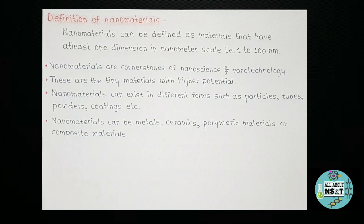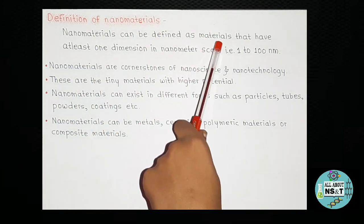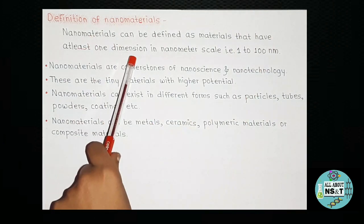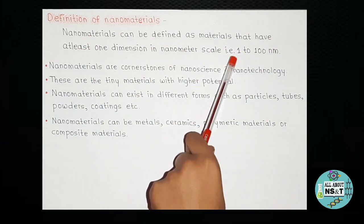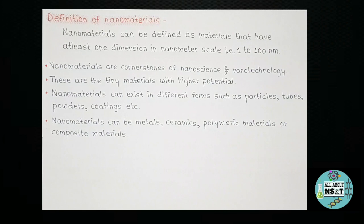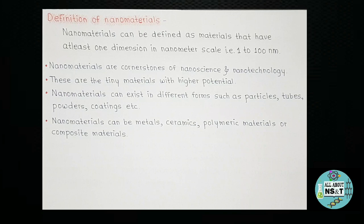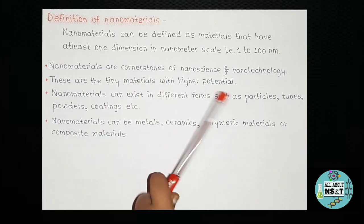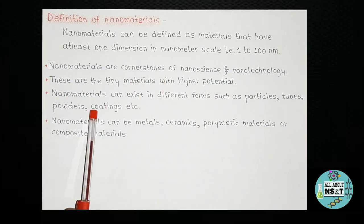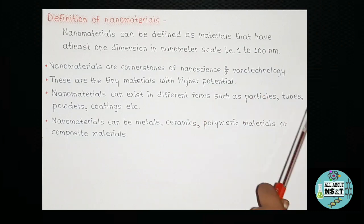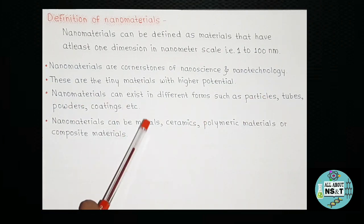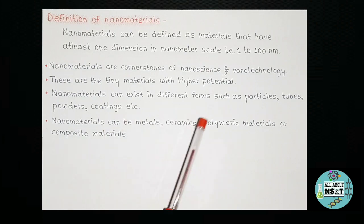To begin with, let's know the definition of nanomaterials. Nanomaterials can be defined as materials that have at least one dimension in the nanometer scale, that is 1 to 100 nanometers. Nanomaterials are cornerstones of nanoscience and nanotechnology — these are tiny materials with higher potential. Nanomaterials can exist in different forms such as particles, tubes, powders, coatings, etc. Nanomaterials can be metals, ceramics, polymeric materials, or even composite materials.